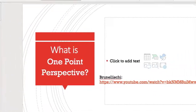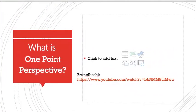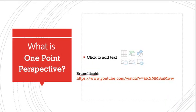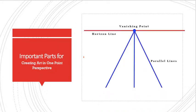All right. So one-point perspective is really just a way to create depth in an artwork. And that's what you can write down as your definition, a way to create depth in an artwork. The important parts for creating one-point perspective are the horizon line, the vanishing point, and the converging or parallel lines.